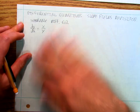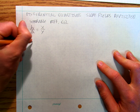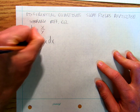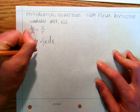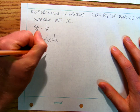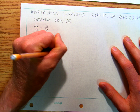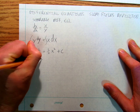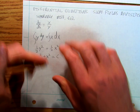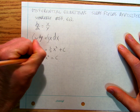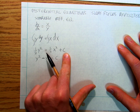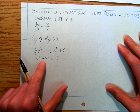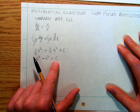So what I'm going to do is separate my differential equation. I'm going to get my y's on one side, so y dy equals x dx. I take the integral of both sides and get one half y squared equals one half x squared plus c. I multiply everything by two — c is an unknown constant, so two times c is still an unknown constant — and I get y squared minus x squared equals c.